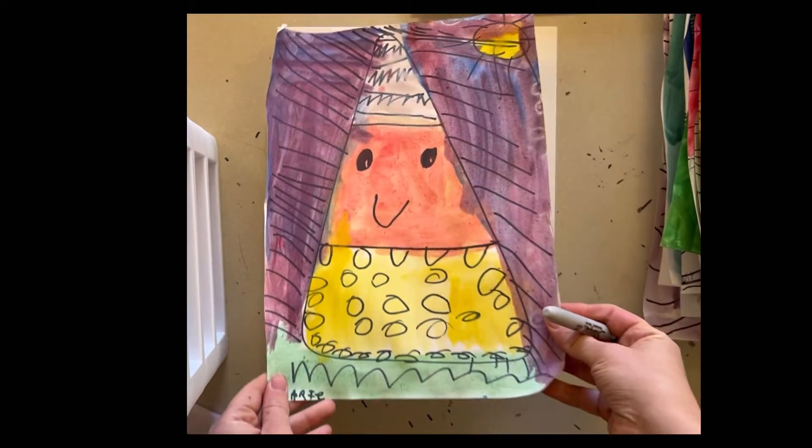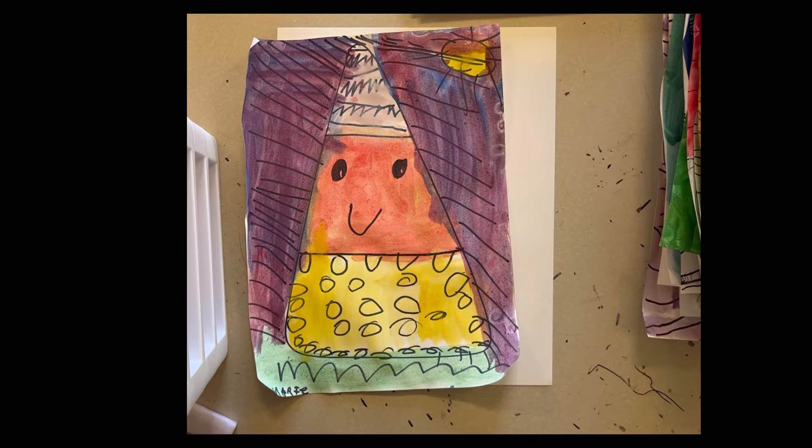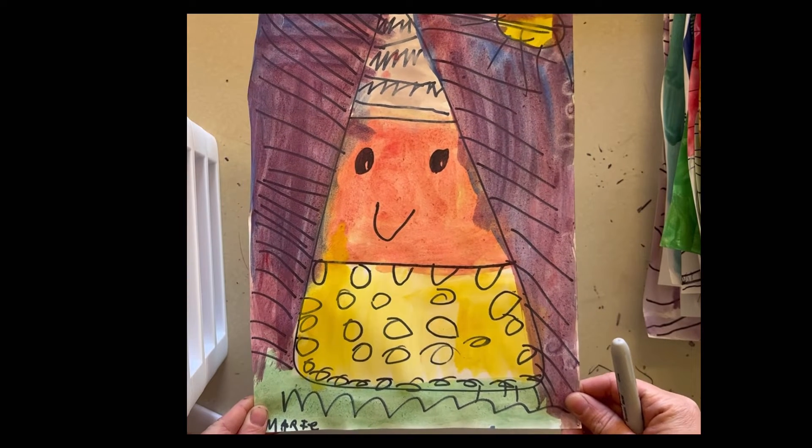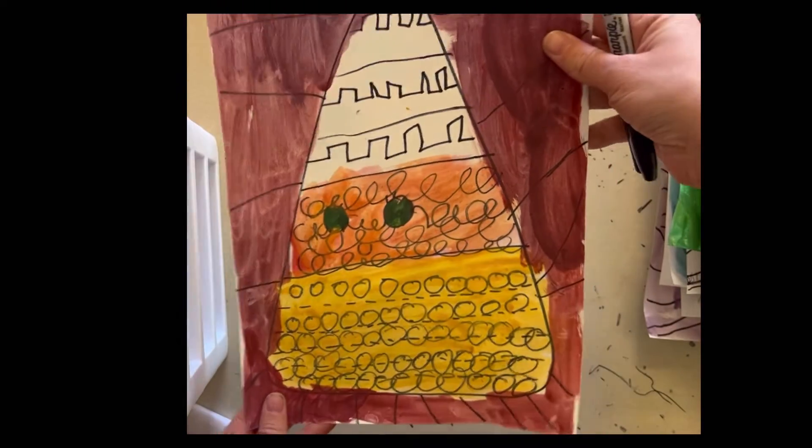Hi! Today we are going to make these super cute line, shape, and patterned candy corn characters. This is an example from one of my other classes in first grade. There's another cool example.